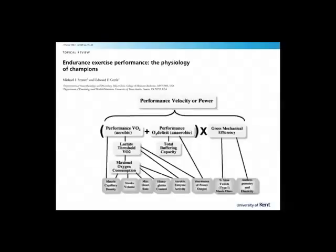Athletic performance has long been known to have a wide range of physiological determinants. In the mid-1920s, A.V. Hill emphasised the importance of muscle fatigue in relation to exercise performance and discussed issues relating to energy stores and oxygen demand of the activity. More recently, more comprehensive models of athletic performance have been presented, such as this one by Joyner and Coyle 2008. Joyner and Coyle describe a model whereby performance velocity or performance power is dependent upon three key parameters: performance VO2, performance O2 deficit, and gross mechanical efficiency.